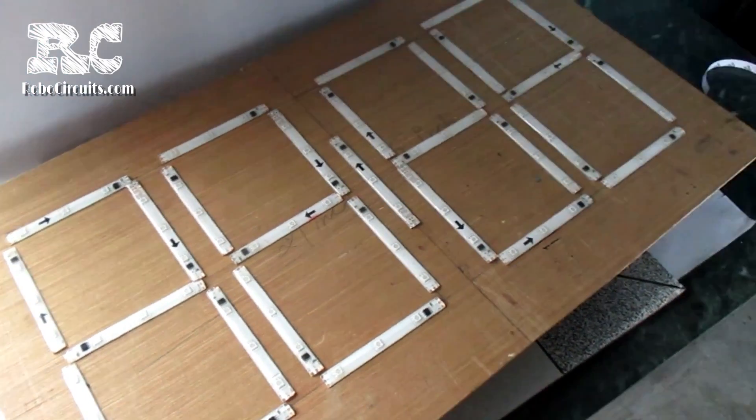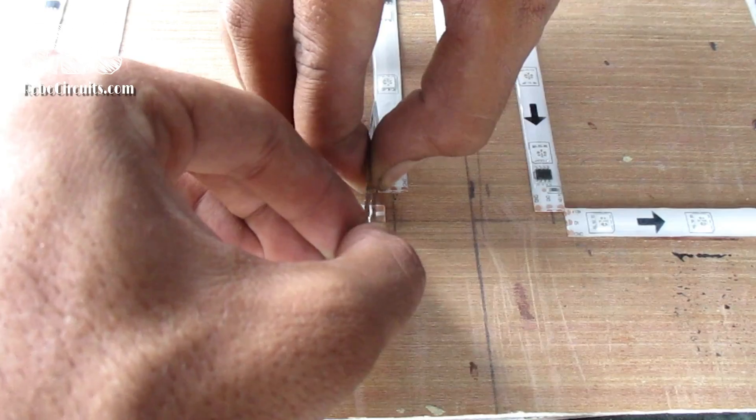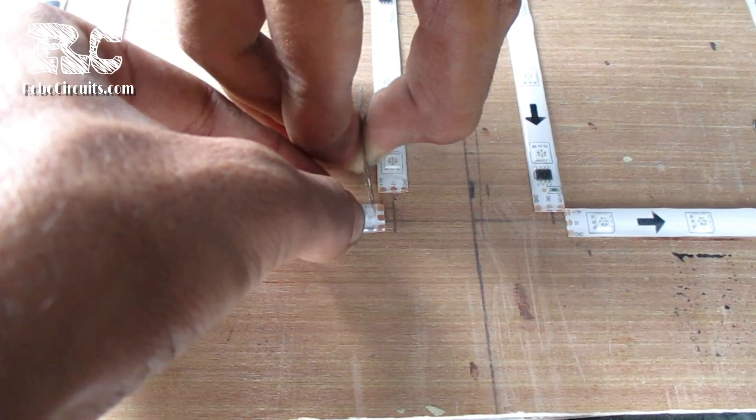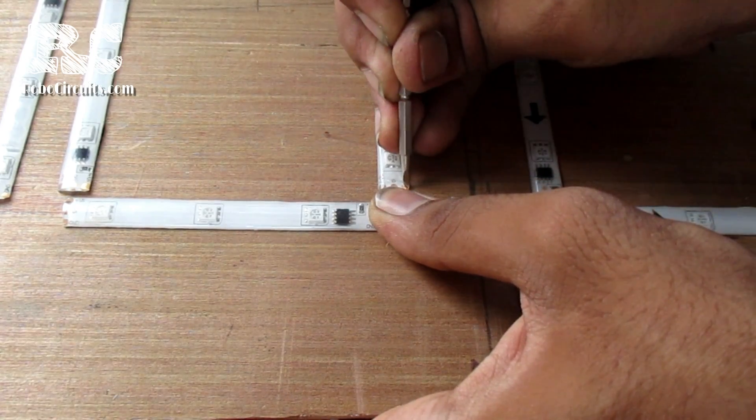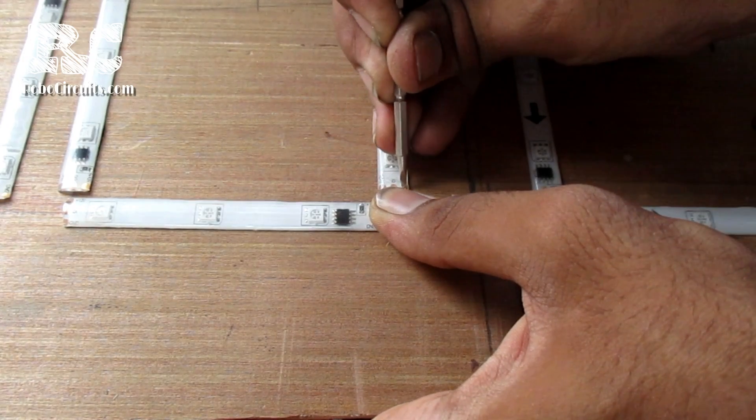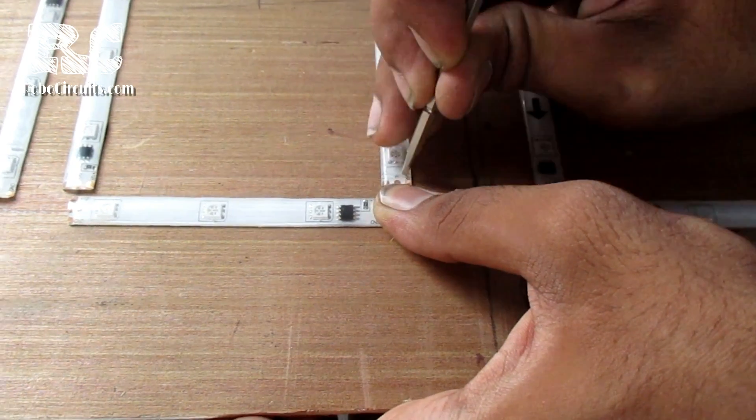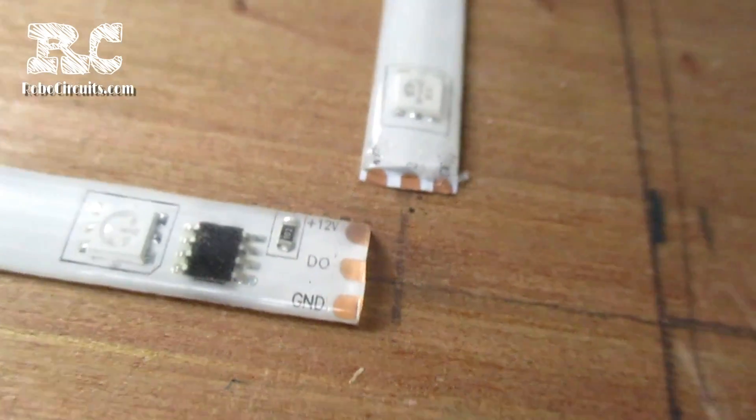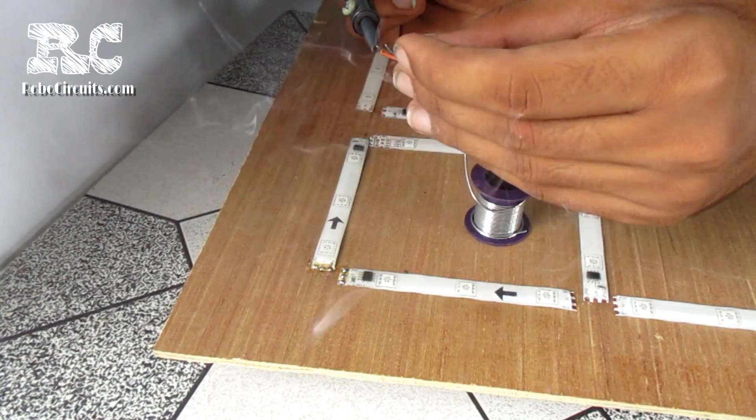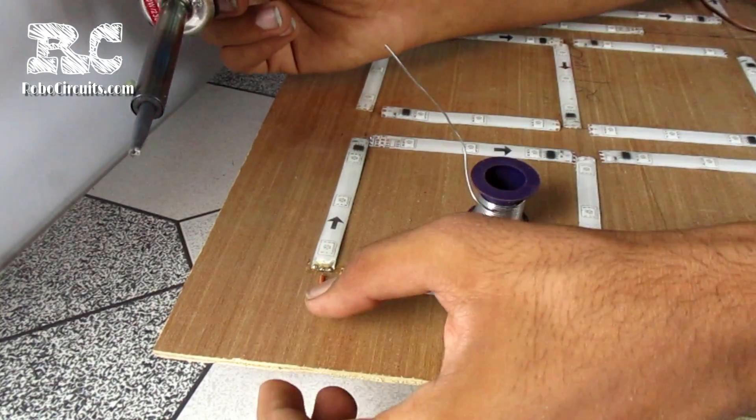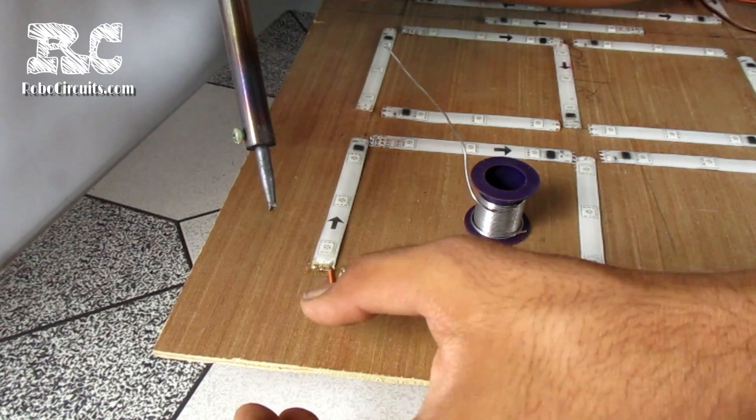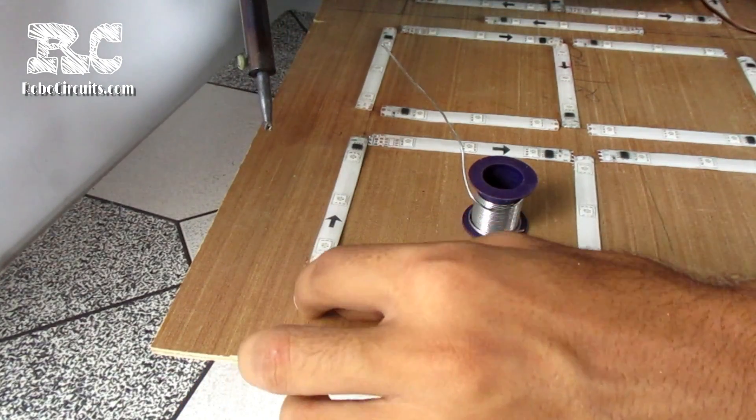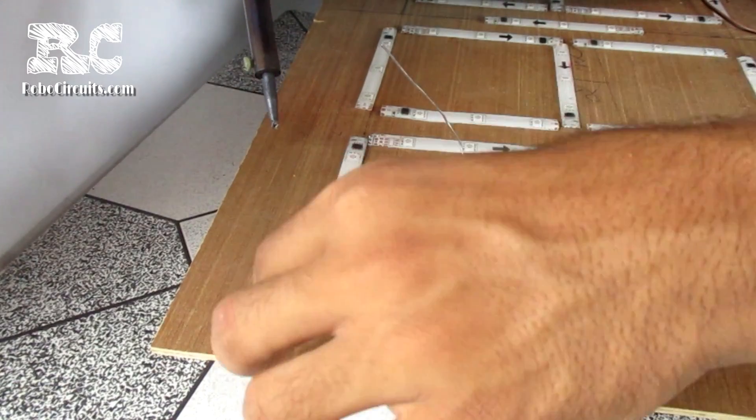Now do the same for all four. Then I took a cutting blade and removed the plastic from the terminals, and also used a sharp screwdriver for removing the plastic. Then I did it for all the chips. Then I soldered all the points of the strip from 12 volts to 12 volts, ground to ground, and data out to data in of consecutive strips.